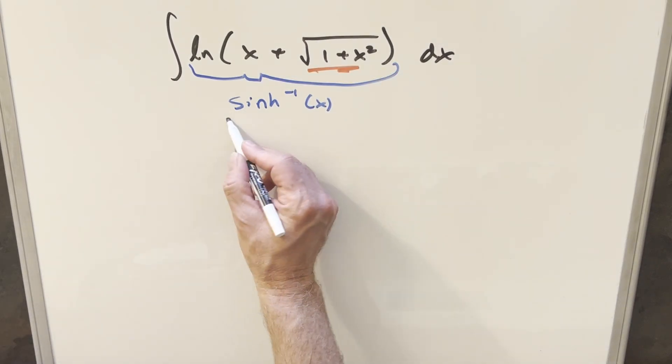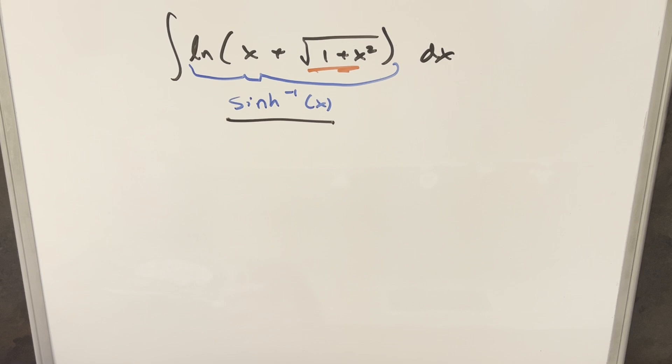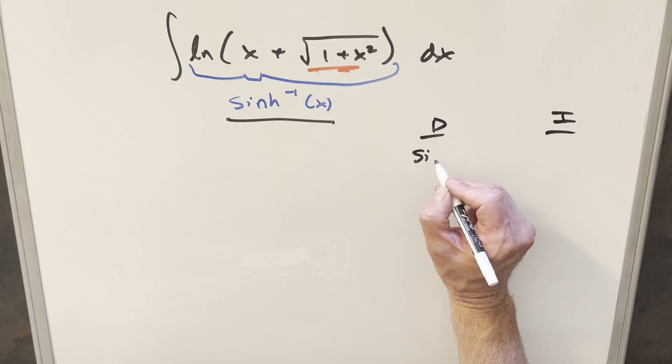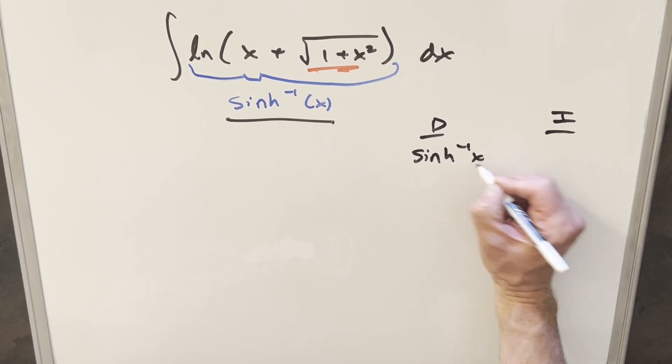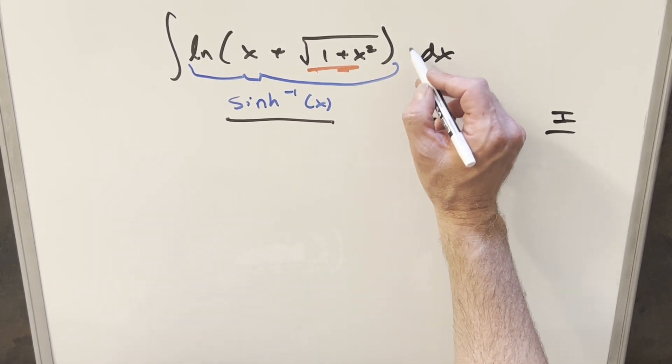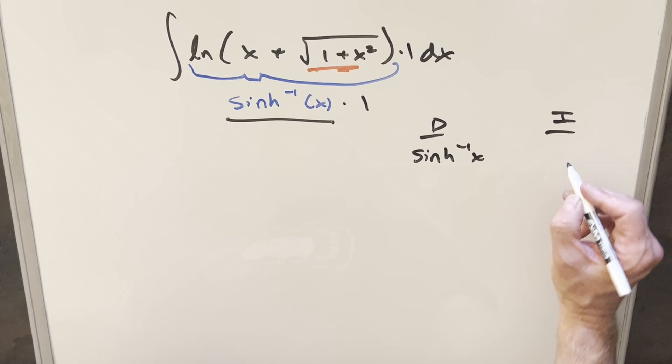So anyway, let's just go ahead and integrate inverse sinh. And the way you want to do it, usually when you just have an inverse function, is going to be integration by parts. And we'll do the di method over here to the right. Integrating inverse sinh, we'll kind of just create a 1 here in order to integrate.